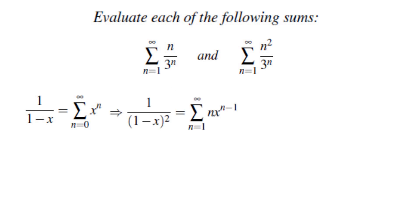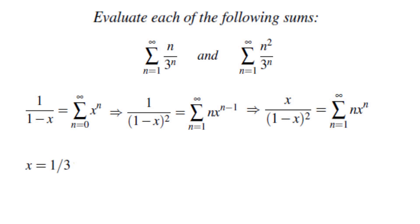So back to the solution. If you differentiate both sides, the left side becomes 1 over (1 minus x) squared, and the right side becomes what we want with the exception that the exponent is n minus 1 and not n. Because of that, we multiply both sides by x to get x over (1 minus x) squared equals the sum of n x^n, n equals 1 to infinity. The only thing left is to replace x by 1/3, and we end up with the sum of n over 3 to the power of n equals 3/4.